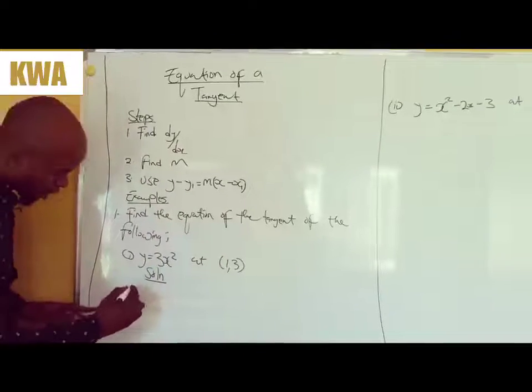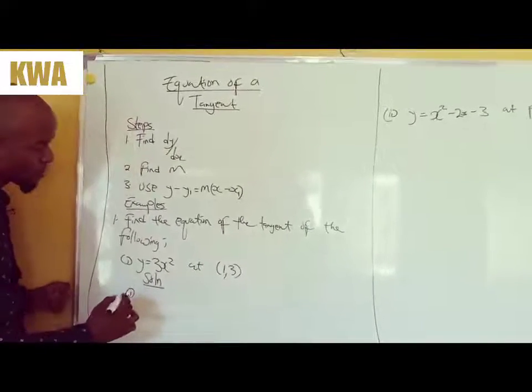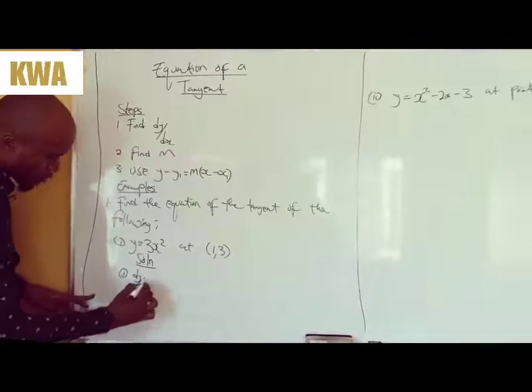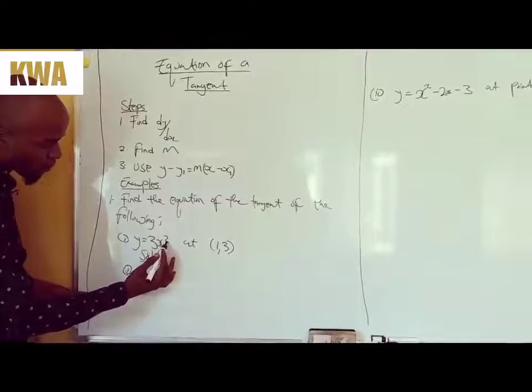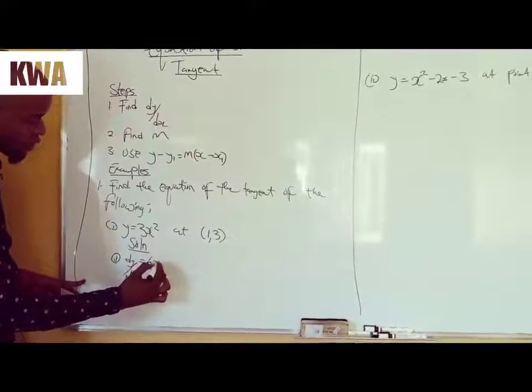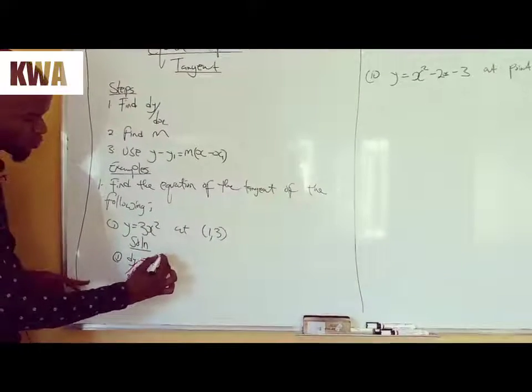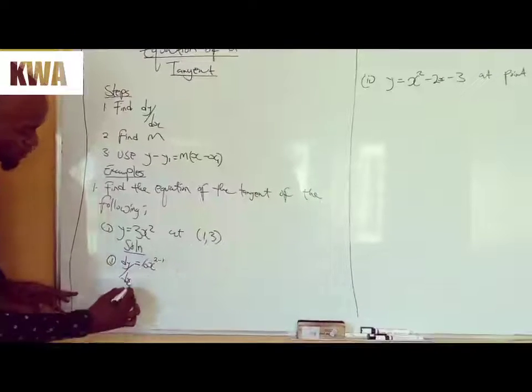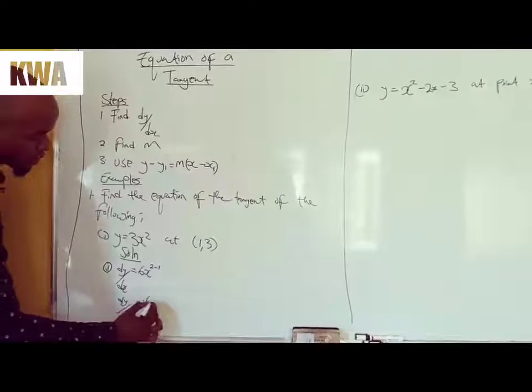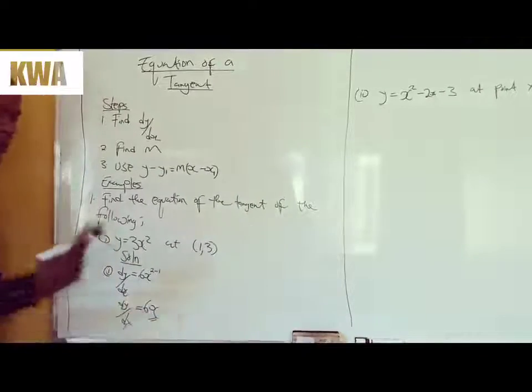The first thing is this, we find dy/dx. You remember, this will be dy/dx. You first start by multiplying this power, the constant, so 2 times 3, 6x, then you subtract to be 2 minus 1. So dy/dx here will be 6x. You have found your first step.